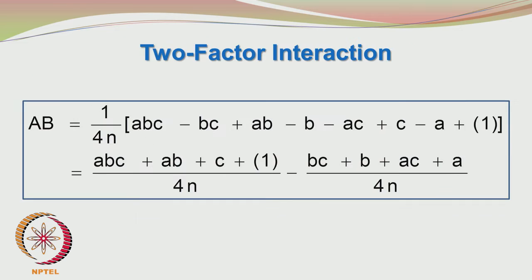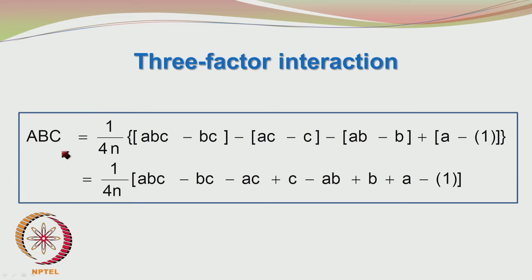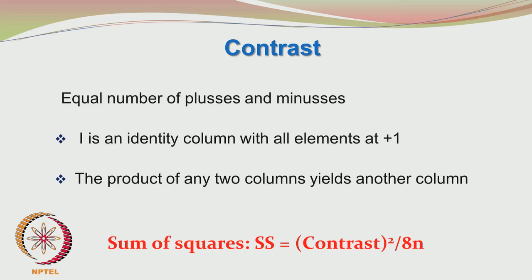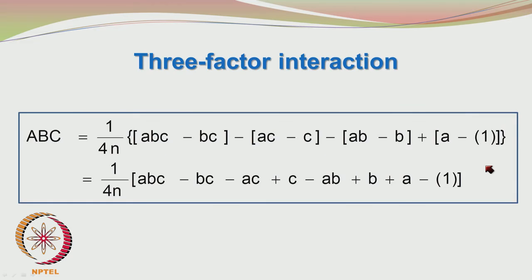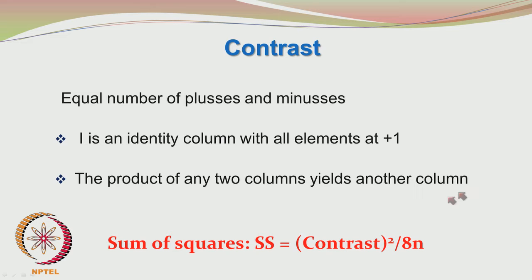Similarly for AB, certain terms are positive and others negative. With a 2⁴ design involving 16 elements, the formulae would become very cumbersome to remember. You can also have an ABC three-way interaction. In any contrast you will have equal numbers of pluses and minuses — 4 pluses and 4 minuses for the 2³ case. The product of any 2 columns yields another column. Sum of squares is contrast squared divided by 8n.